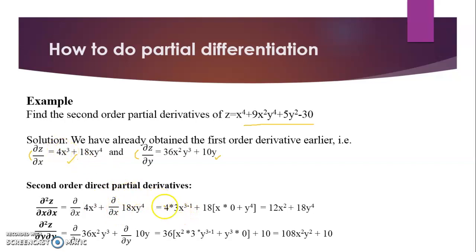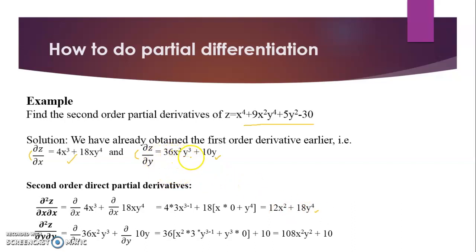Continuing the direct second-order derivative with respect to X: for 18XY⁴, using the product rule with 18 as common — X times Y⁴, where Y⁴ is constant so its derivative is 0, plus Y⁴ times the derivative of X which is 1. So the result is 12X² + 18Y⁴.